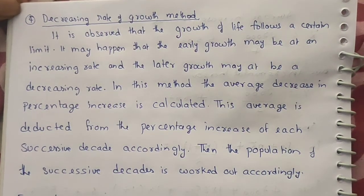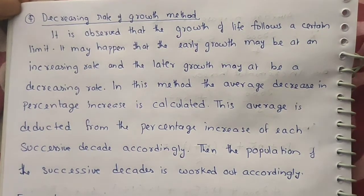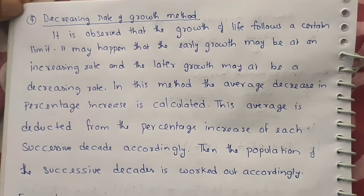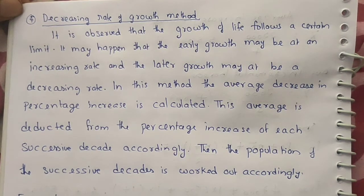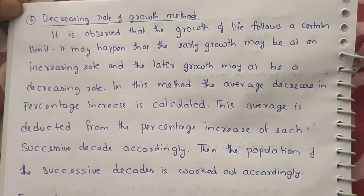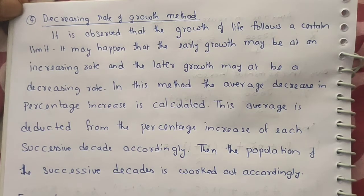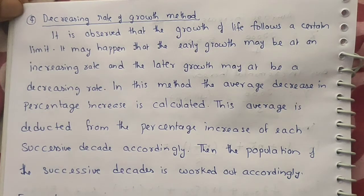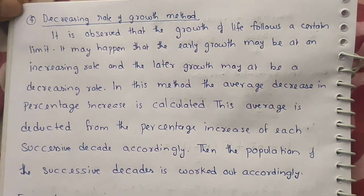Hello everyone, welcome to another class of environmental engineering. We were discussing population forecasting methods in the previous video. We have already discussed three types: arithmetic increase method, geometric increase method, and incremental increase method. Now we are going to discuss another method called the decreasing rate of growth method.